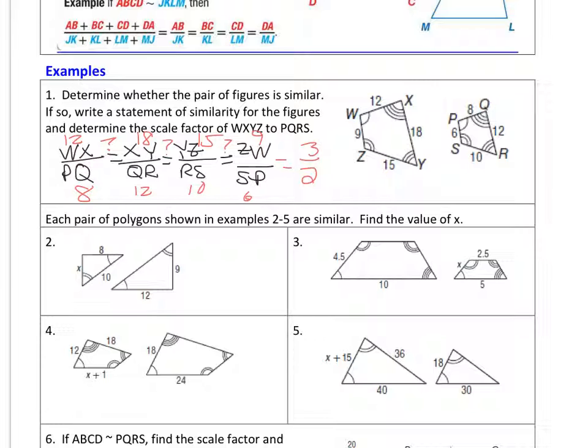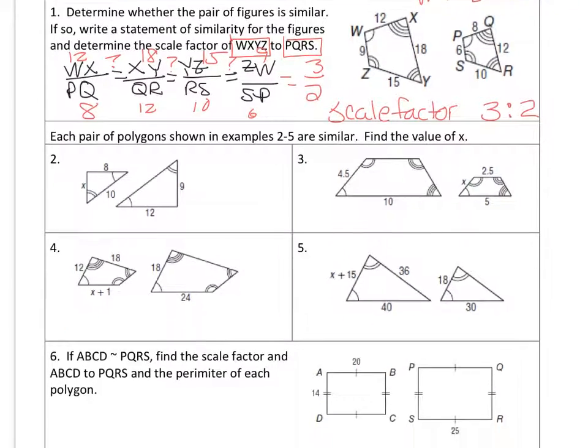Alright, so the scale factor from the large here to the small, our scale factor or ratio, if we compare in that order, would be 3 to 2. If I asked you what is the scale factor from the small to the large, then it would be 2 to 3. Alright, actually our final step here before I move on. We should say that our conclusion is WXYZ is similar to PQRS. That's really our conclusion.